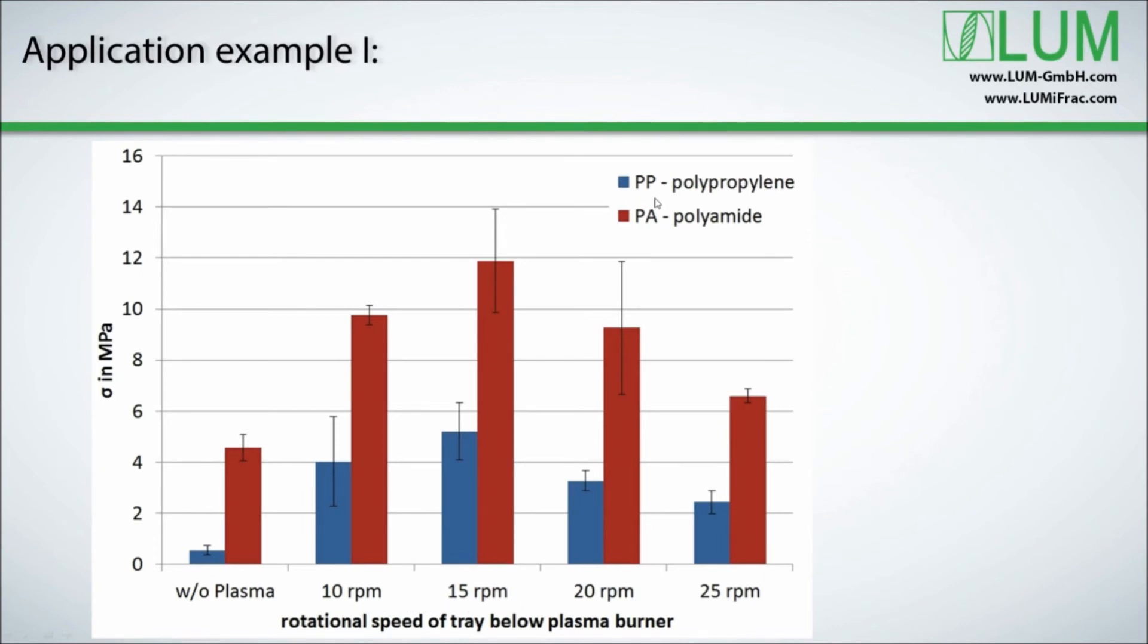PP, which has a lower surface energy, 32 mN per meter compared to PA, 43 mN, always shows lower strength. Even after plasma treatment, the ranking of the polymers used is the same as before treatment. The positive effect of plasma treatment on adhesive properties can be seen in an increase of strength. The optimum rotation speed in this case is 15 RPM. Both polymers exhibit highest strength at this RPM.